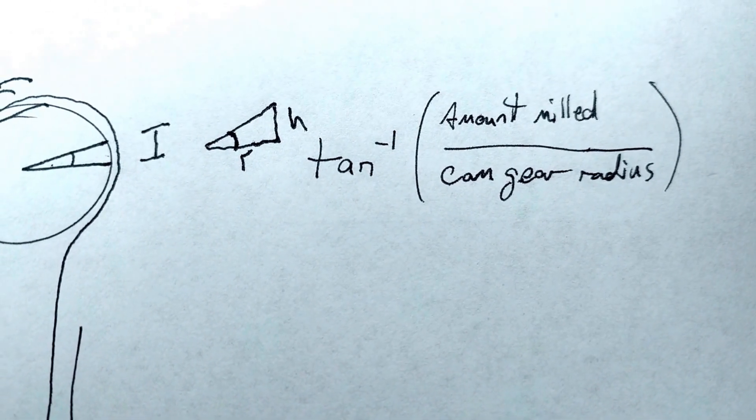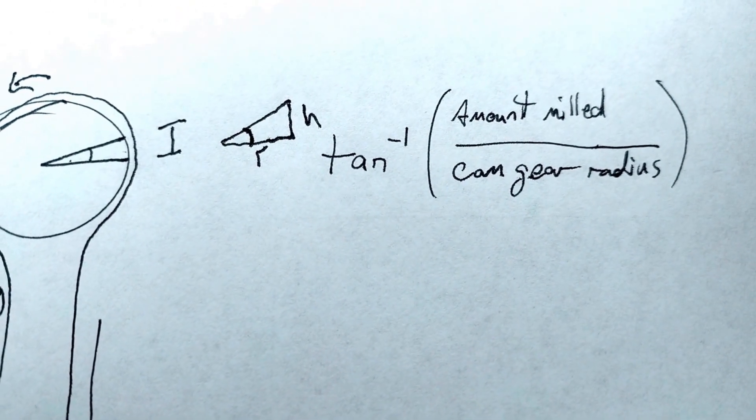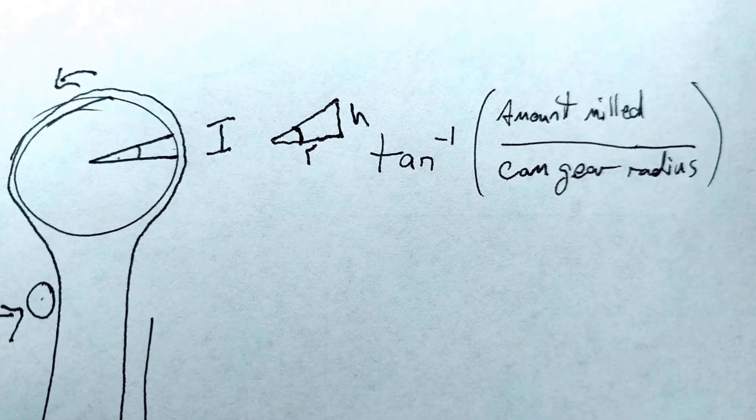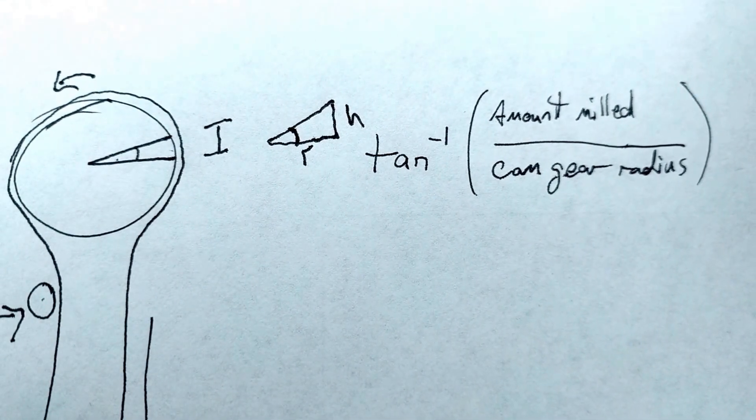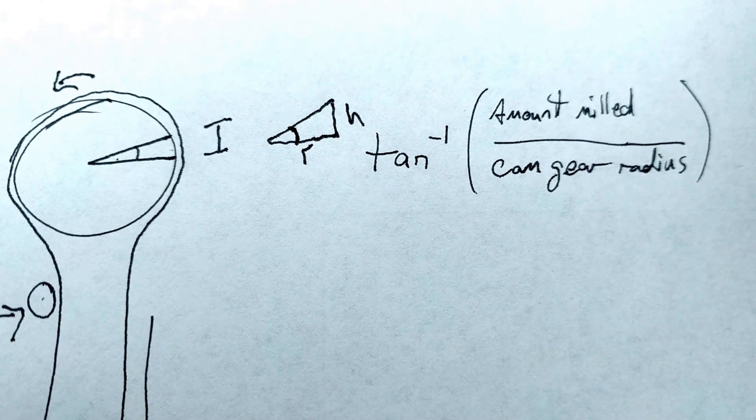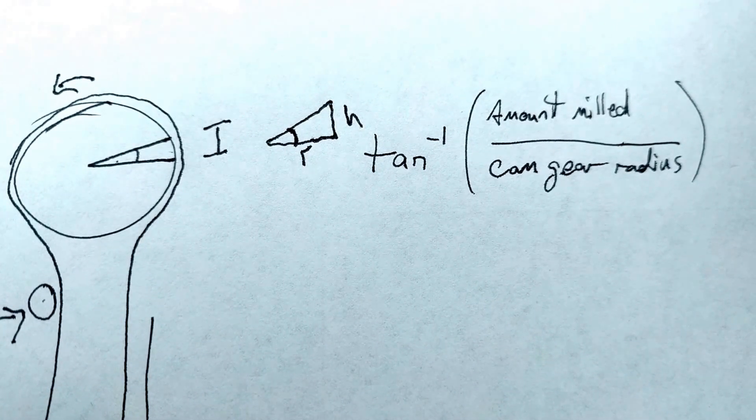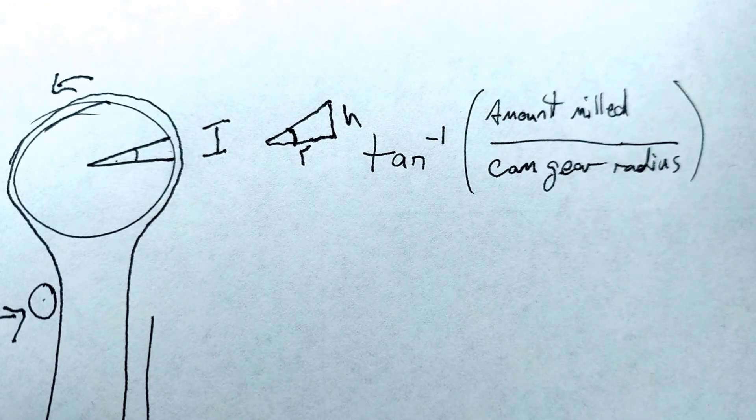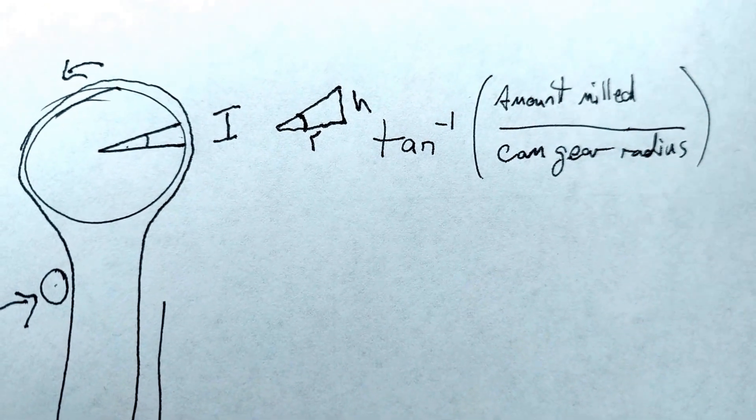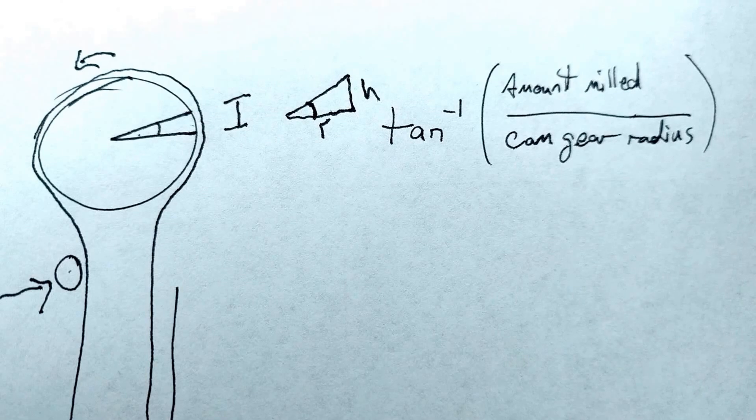In the case of my engine, I've got about a five inch diameter cam gear, which is a 2.5 inch radius and I milled 40 thousandths off the head, which gets me just about one degree of phase change on my camshaft.